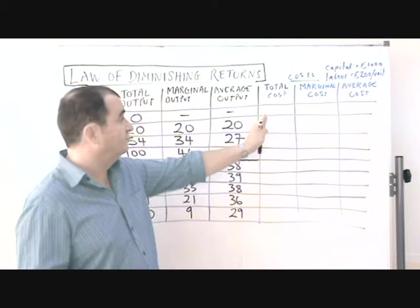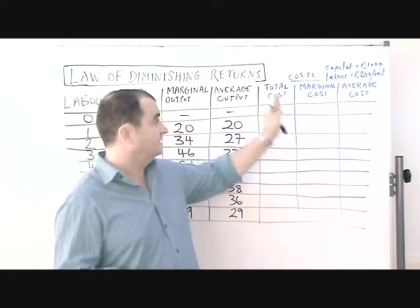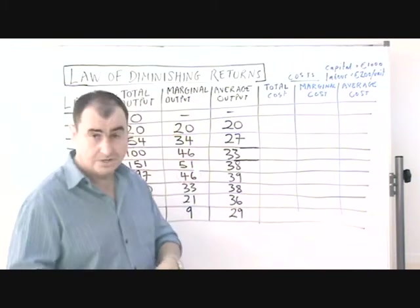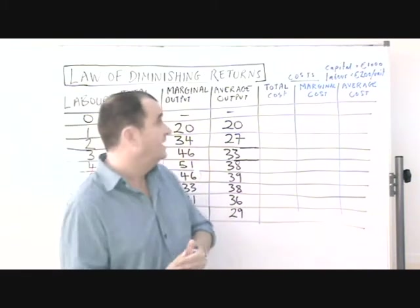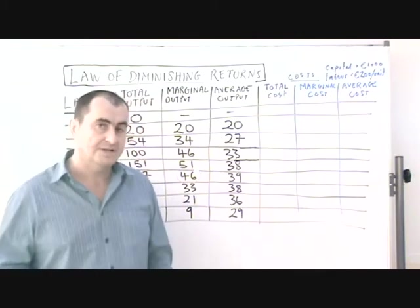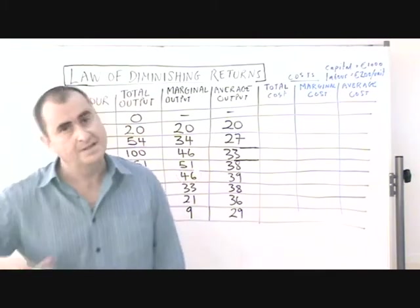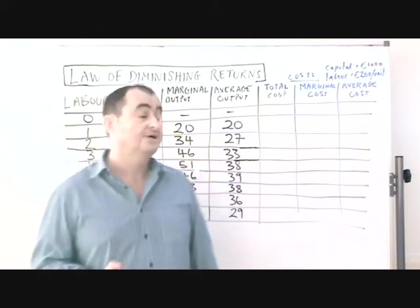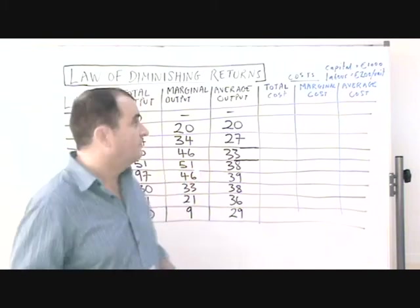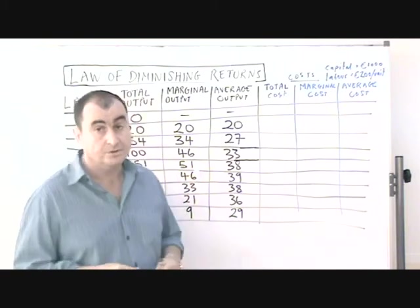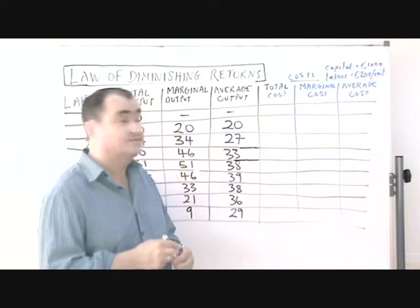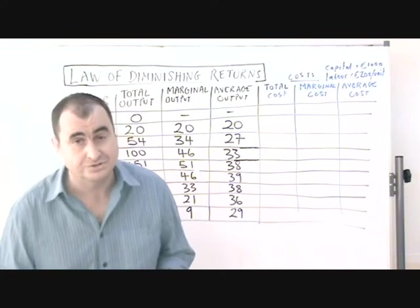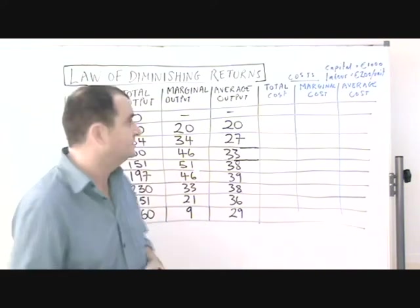Here I have three extra columns: the total cost, the marginal cost, and the average cost. I'm going to work in Euros. Let's assume that there is already a capital/land cost for the fixed factors of production of 1000 Euros, and let's further assume that labour costs are 200 Euros per unit.